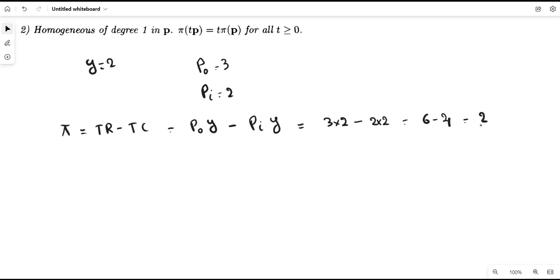So this is the initial profit. Now, this property means that if you scale up the output prices as well as the input prices by some positive scalar, then profit will also be increased by the same scalar.